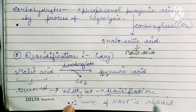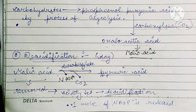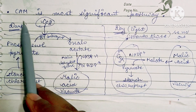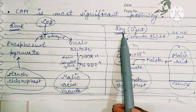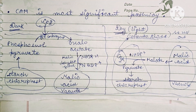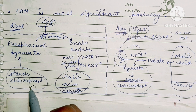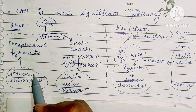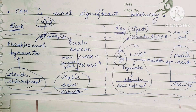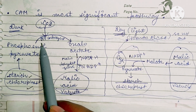Now let's look at the CAM cycle diagram. This is the dark phase of the cycle, where stomata are open and CO2 enters. In cells, there are two regions: the chloroplast and the vacuole. In the chloroplast, starch is stored. Starch is converted into phosphoenol pyruvate, which is then converted into oxaloacetate by the enzyme PEP carboxylase — phosphoenol pyruvate carboxylase — which helps fix CO2.